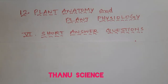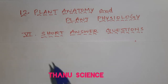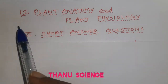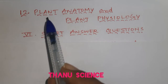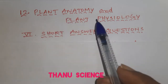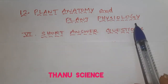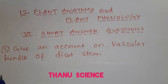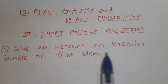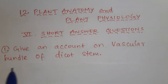Welcome to TanuScience. In this video, we will look at the answers for short answer questions in Chapter 12, Plant Anatomy and Plant Physiology of Class 10. First question: give an account on vascular bundle of dicot stem.